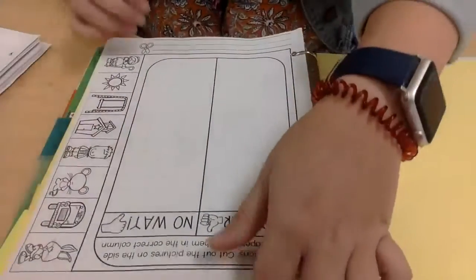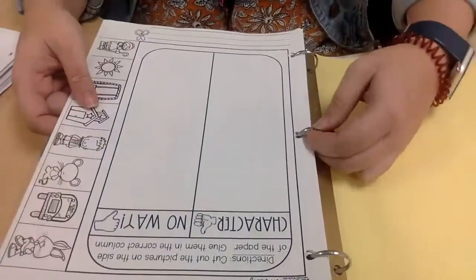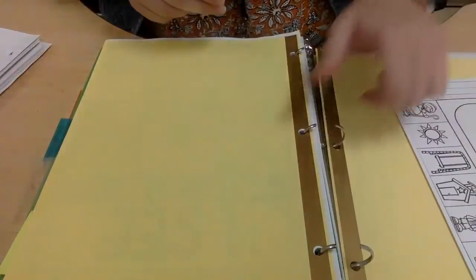So we are going to open our binders and under the red tab, there should be a bunch of the read aloud activities. You are going to want to take those out of your binder and put them to the side.